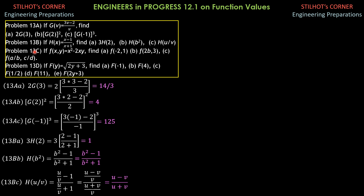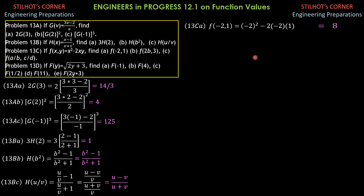Then we proceed to 13c. If f(x, y) = x² minus 2xy, find the function value of (−2, 1). So x is negative 2, y is 1. f(−2, 1) is (−2)² minus 2 times (−2) times 1, which is 4 plus 4. So the answer is 8.